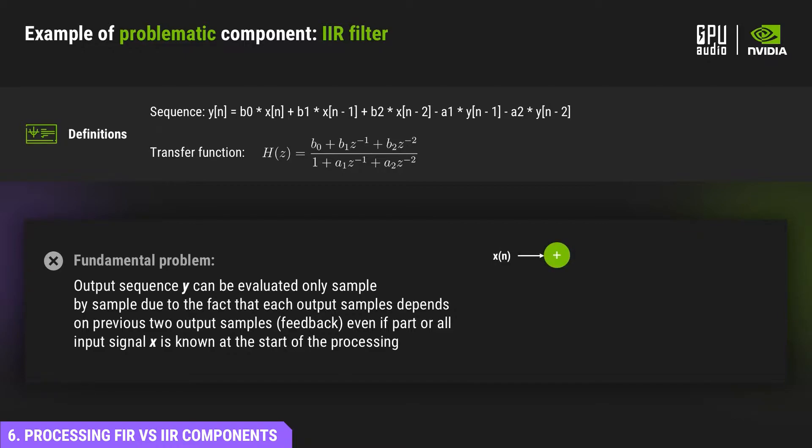As one can clearly see, it has data dependencies. As we see Y in the right side of the equation. We even see it twice as each output sample depends on two previous output samples.